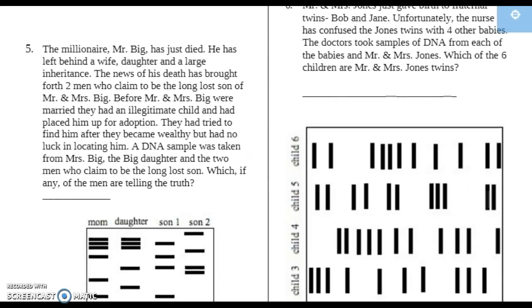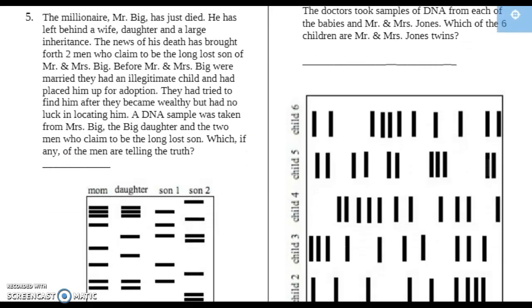Number five says the millionaire, Mr. Big, has just died. He has left behind a wife, a daughter, and a large inheritance. The news of his death has brought forth two men who claim to be long-lost sons of Mr. and Mrs. Big. Before they were married, they had an illegitimate child that they placed up for adoption. They tried to find him after they became wealthy, but had no luck in locating him. A DNA sample was taken from Mrs. Big, the daughter, and the two men who claim to be the long-lost son.